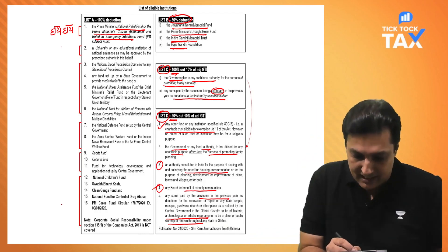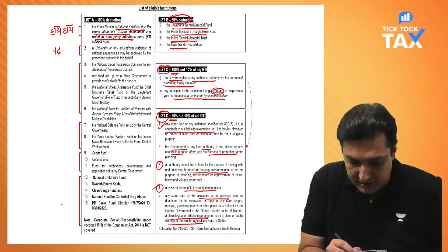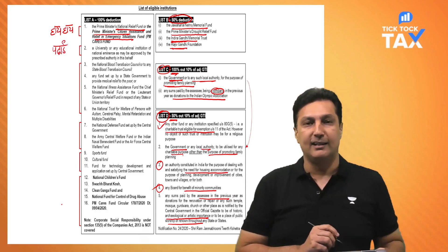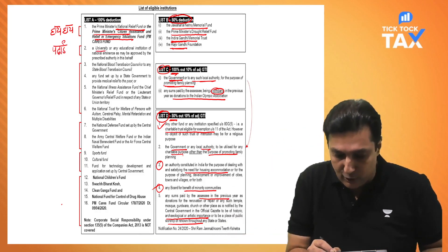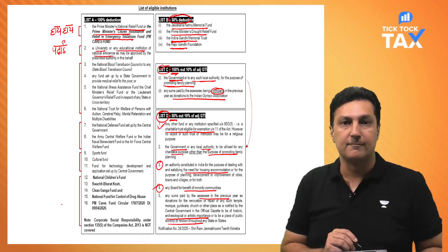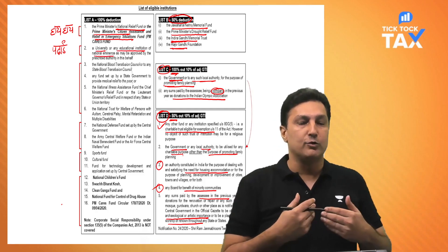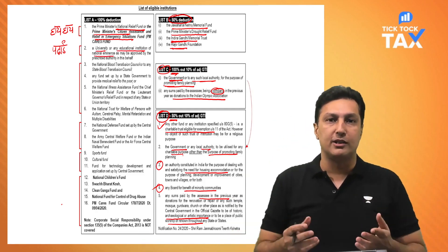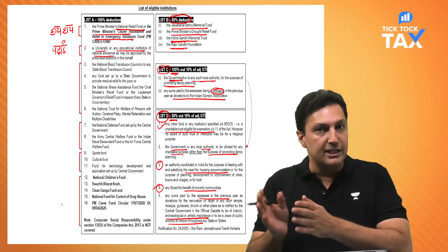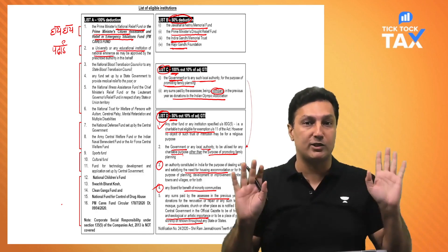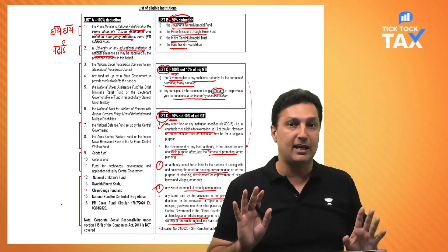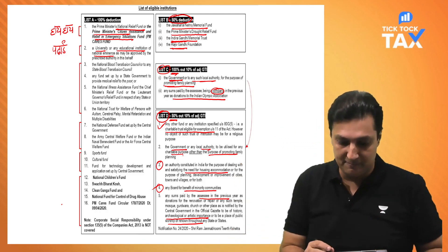From 'Hai Hai' we move to 'padhai' — the study-related 'high'. Remember: University and Educational Institutes of National Eminence. If a university or college has taken 80G registration and you donate to them — and in return you get no seat, remember this is a peace-of-mind donation — that comes in A-list.